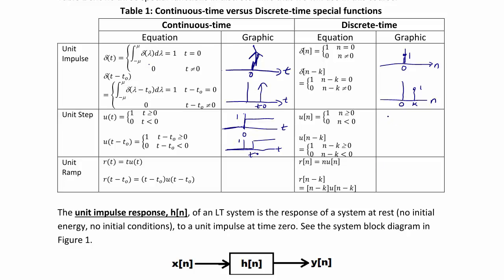Here's our unit step in discrete time, where we have 0s and then at time 0 it jumps up to 1. And here's our shifted discrete unit step with 0s, and at time k it jumps up to 1.